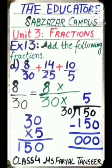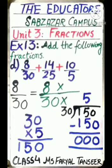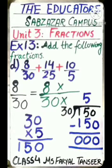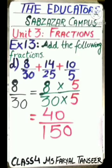LCM is 150. Our first fraction is 8/30. We need to make the denominator equal to 150. I divide 150 by 30 and the answer is 5. This means I have to multiply both numerator and denominator of 8/30 by 5. So 8×5=40 and 30×5=150, giving 40/150.